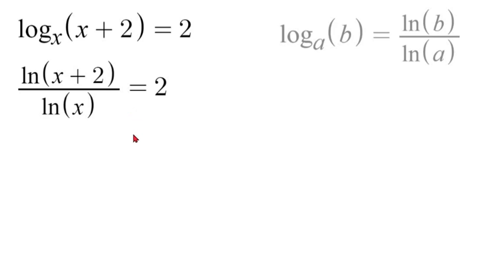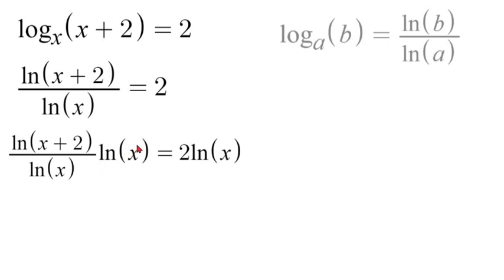Now in order to solve this further we are going to multiply both sides by natural log of x to cancel this out. Our natural logs of x will cancel. We will be left with 2 natural log of x on the right side.